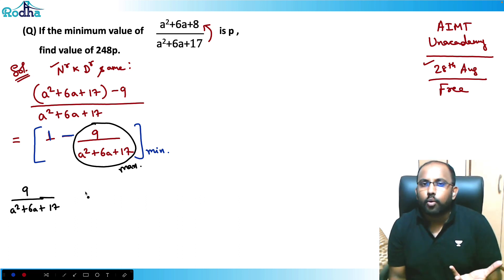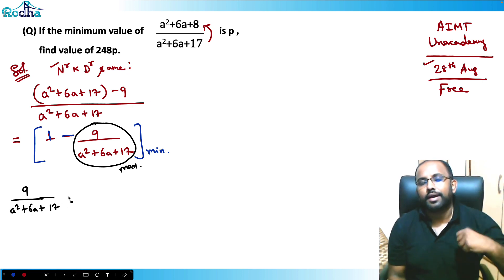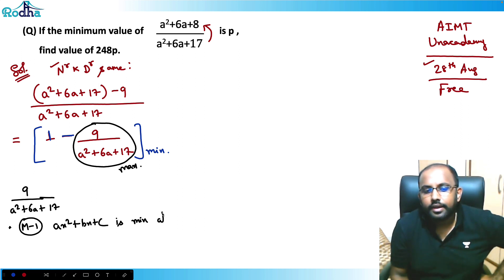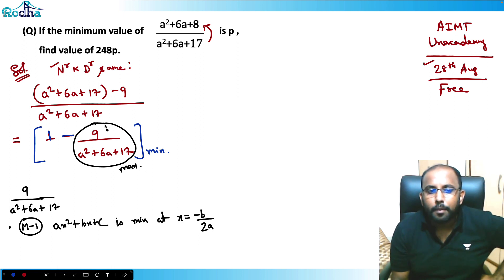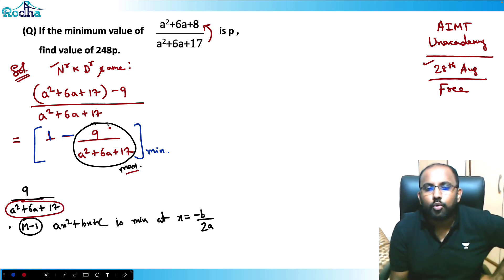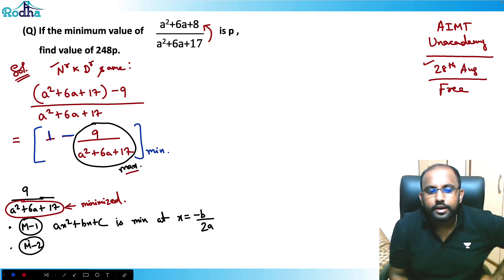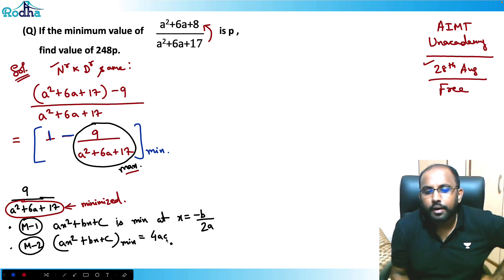So I need to maximize 9/(A² + 6A + 17). There are multiple ways to maximize a quadratic expression. Method 1: any quadratic AX² + BX + C is minimum at X = −B/2A. Since (A² + 6A + 17) is in the denominator, to maximize the whole fraction the denominator should be minimized. Method 2: directly, the minimum value of AX² + BX + C equals (4AC − B²)/4A.